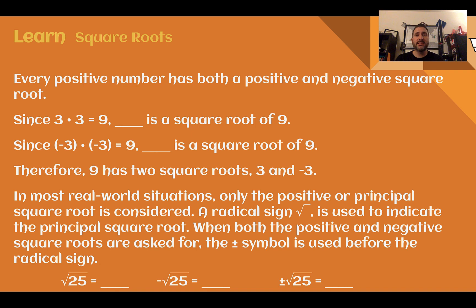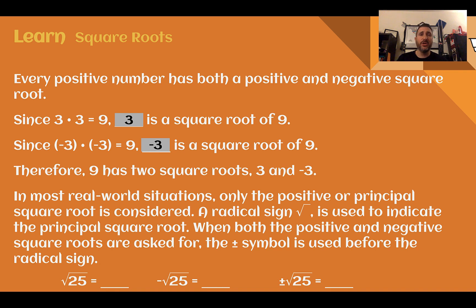Every positive number has both a positive and negative square root. Since 3 times 3 is 9, 3 is the square root of 9. But since negative 3 times negative 3 is also positive 9, negative 3 is also a square root of 9. So 9 has two square roots: positive 3 and negative 3. In most real world situations, you're only going to use the positive, or what's called the principal square root, indicated by the radical sign — it looks kind of like a division or check mark combined. When both the positive and the negative are asked for, you will see a plus and minus symbol before the radical sign.